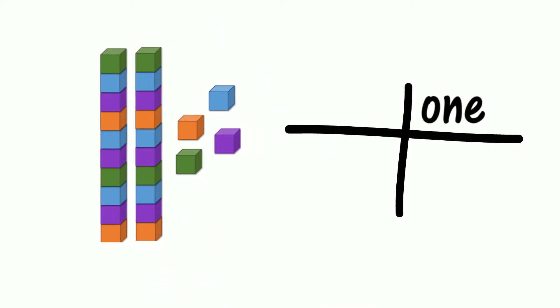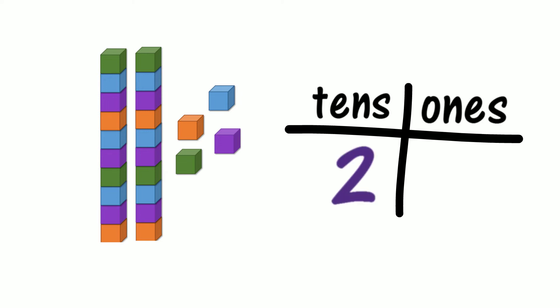Let's draw a place value chart. Let's record our two tens in the tens column and our four ones in the ones column. What number have we made? Have we made 24? What does place value tell us about 24? Does place value tell us that we have two tens? Which digit in 24 tells us that we have two tens?